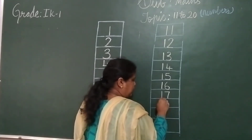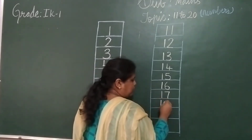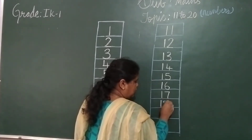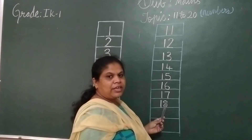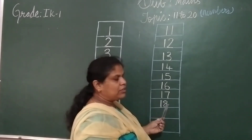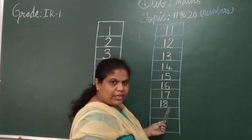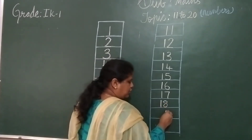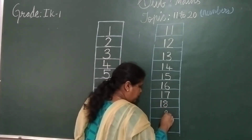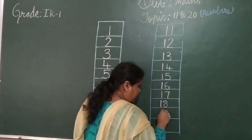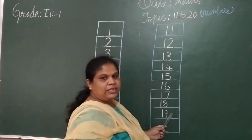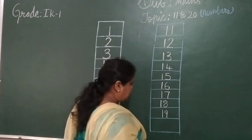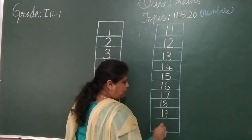After 17, the next number is 18. One, eight — 18. One, eight — 18. After 8, it is 9, right? So 1, nine — 19. One, nine — 19. After 19...